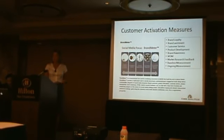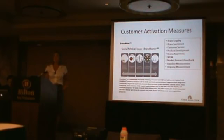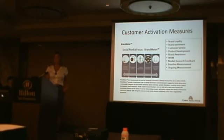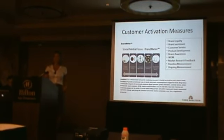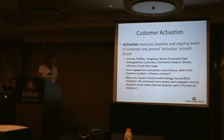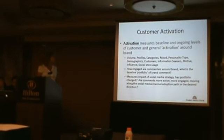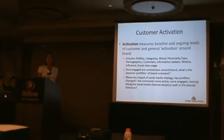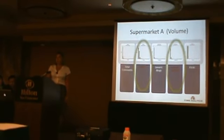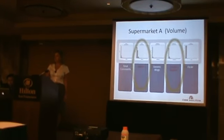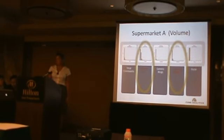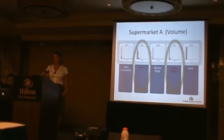In terms of customer activation, we focus a lot on this because we're trying to figure out where the consumer is along the evolutionary curve of brand adoption. We look at customer loyalty and have determined through predictive modeling that certain types of activations lead to customer loyalty. Activation measures include volume, profile, mood, personality type, and understanding motives such as information seekers or expressing an opinion. This is a sample from supermarket A — a lot of comments are around Twitter and forum replies, with over 2-point-something comments per month in this particular category.